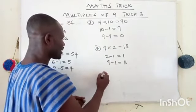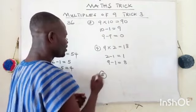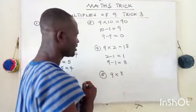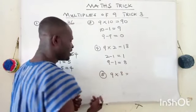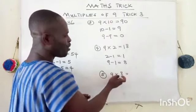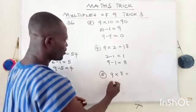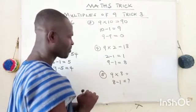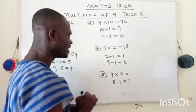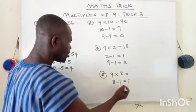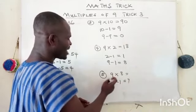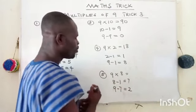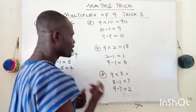Last but not the least, number five: 9 times 8. The rule says subtract one from the number you're multiplying 9 with. So eight minus one gives you seven. Now subtract the seven from nine — nine minus seven gives you two — which means 9 times 8 will give you 72.